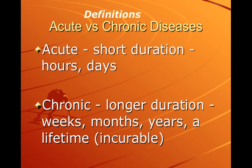Acute versus chronic disease: an acute illness is one of short duration — hours, days, maybe a couple of weeks, like the common cold. Chronic diseases, on the other hand, are of much longer duration — weeks, months, years. Some are incurable; once infected, it is essentially with you for your entire lifetime, with either continual or periodic signs and symptoms of a chronic active infection.